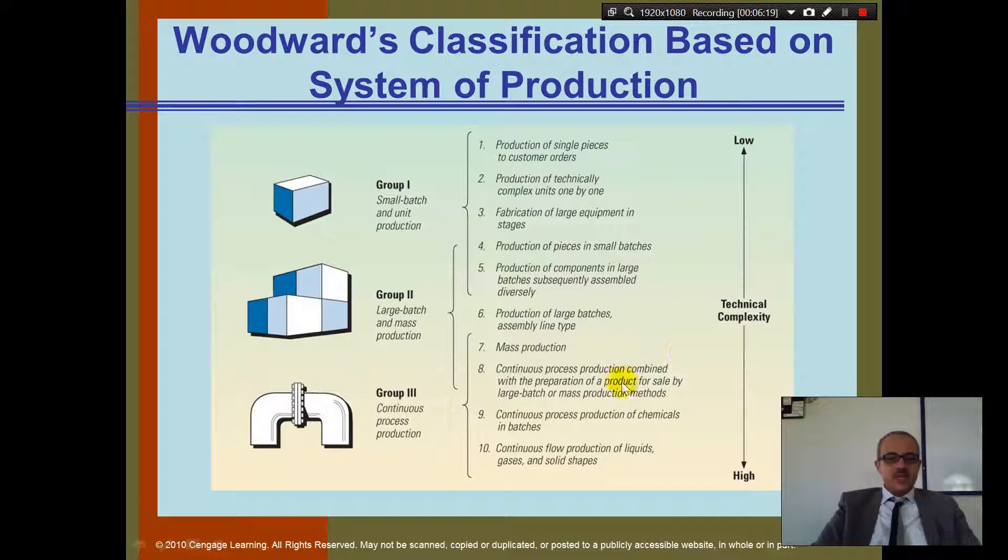Continuous process production combined with the preparation of the product for sale by large batch or small production method. Number 9 is continuous process production of chemicals in batches. So that's when you start to move into, it's no longer just an easy process. It's more like chemical. And so it's more organic. And continuous flow production of liquids, gases, solid shapes. So this becomes a very highly sophisticated type production.